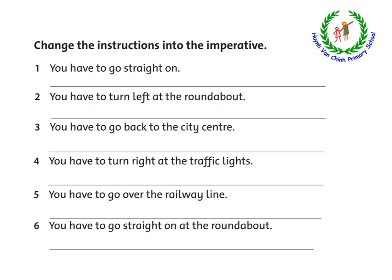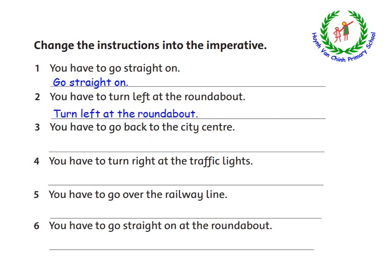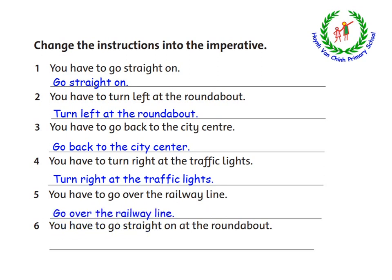Change the instruction into the imperative. We will convert these sentences into imperative sentences — drop the subject and 'have to', keep only the main verb capitalized at the start. Are you ready? Now let's have correction with me. Number 1: Go straight on. Number 2: Turn left at the roundabout. Number 3: Go back to the city center. Number 4: Turn right at the traffic lights. Number 5: Go over the railway line. Number 6: Go straight on at the roundabout.